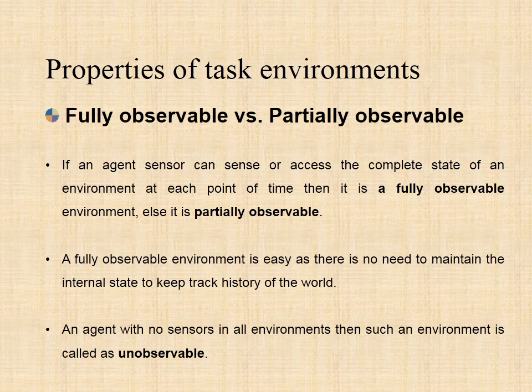Fully observable environments are convenient because the agent need not maintain any internal state to keep track of the world. An environment might be partially observable because of noisy and inaccurate sensors or missing sensor data. For example, a vacuum agent with only a local dirt sensor cannot tell whether there is dirt in other squares. In the case of a taxi driver, it is partially observable because the driver cannot know the whole situation, like the traffic etc.